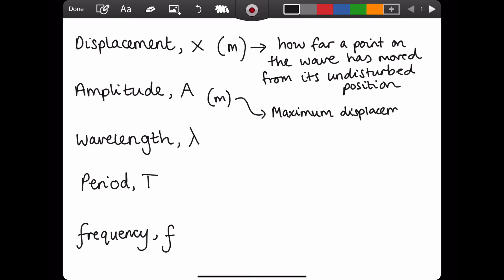Amplitude is the maximum displacement from the undisturbed position. Another way of saying that is from the equilibrium position as well. Wavelength, symbol lambda, again measured in meters. This is the length of one whole wave cycle.